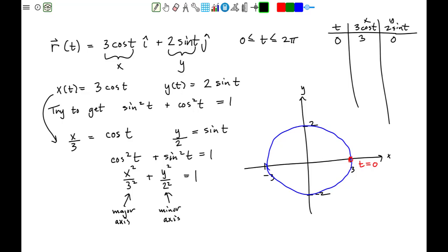Then if we do t equals, let's say, let's do something easy. Let's say t is equal to pi. How about pi over 2? If t is equal to pi over 2, x is equal to 0, y is equal to 2. This puts us right here.